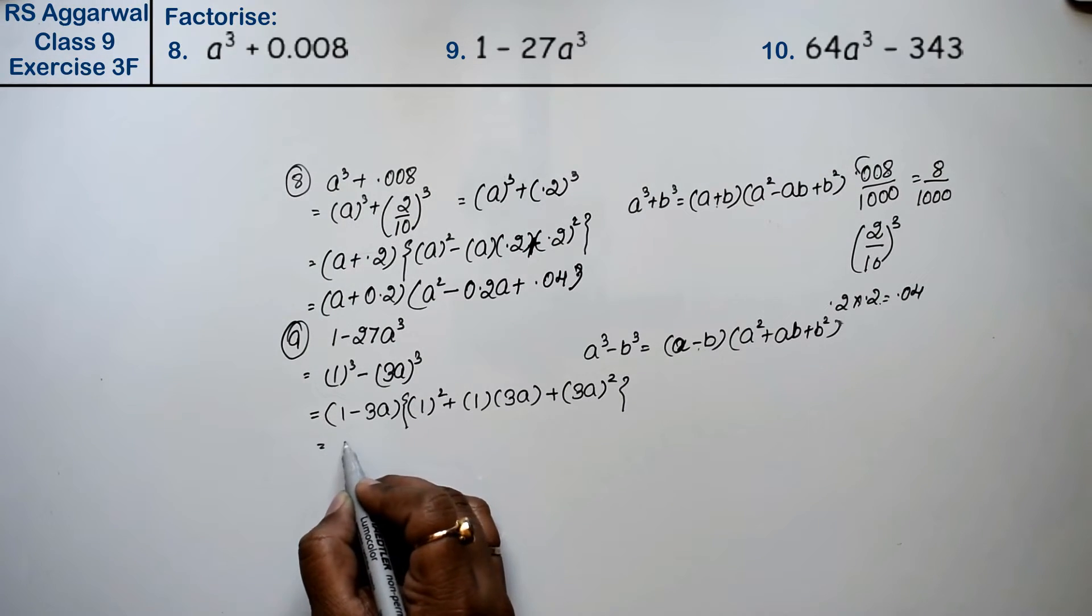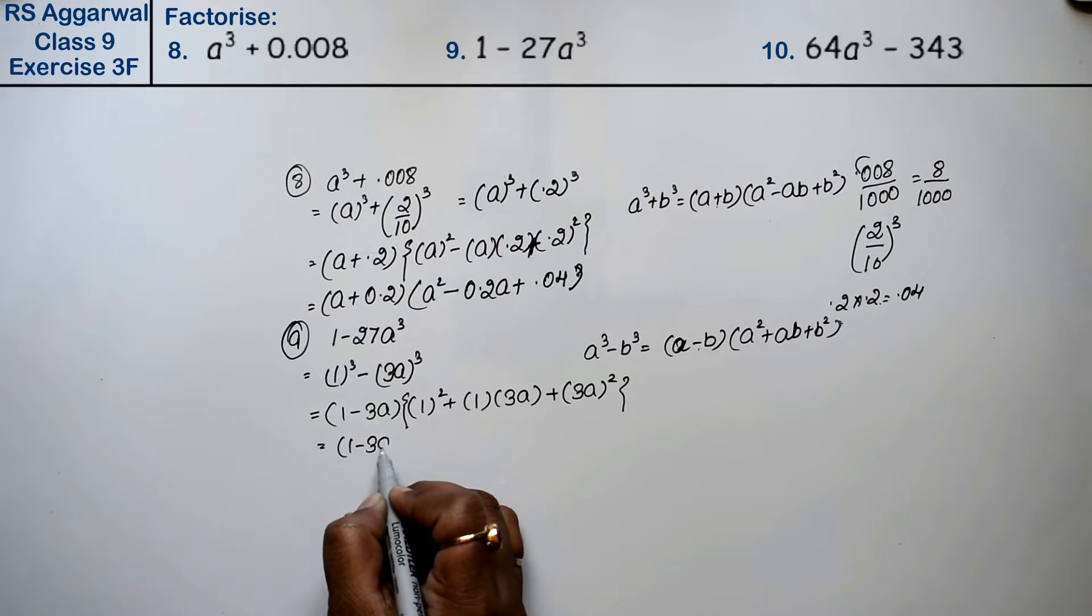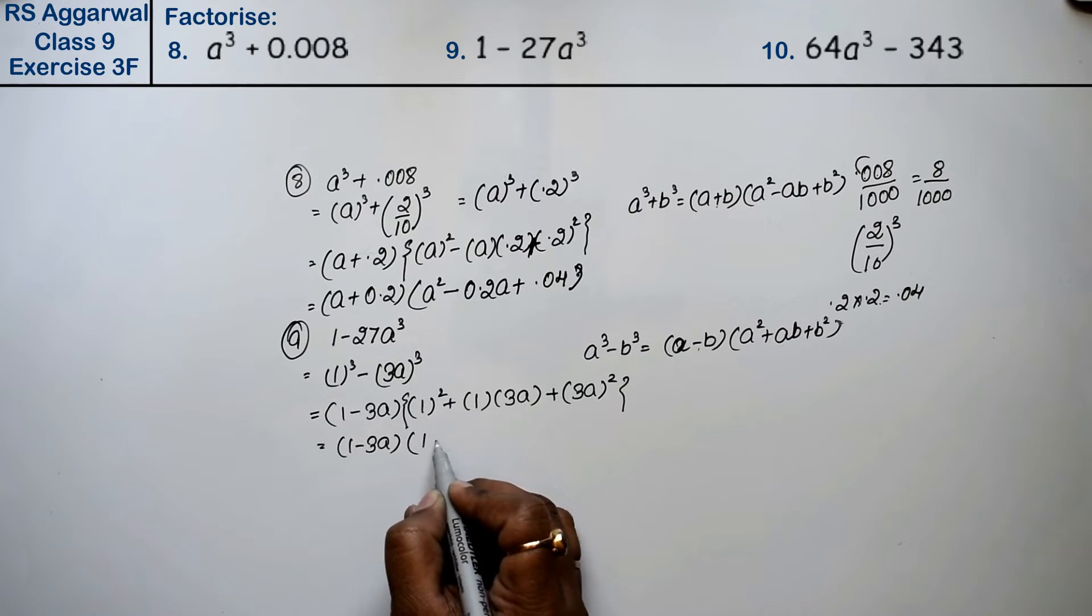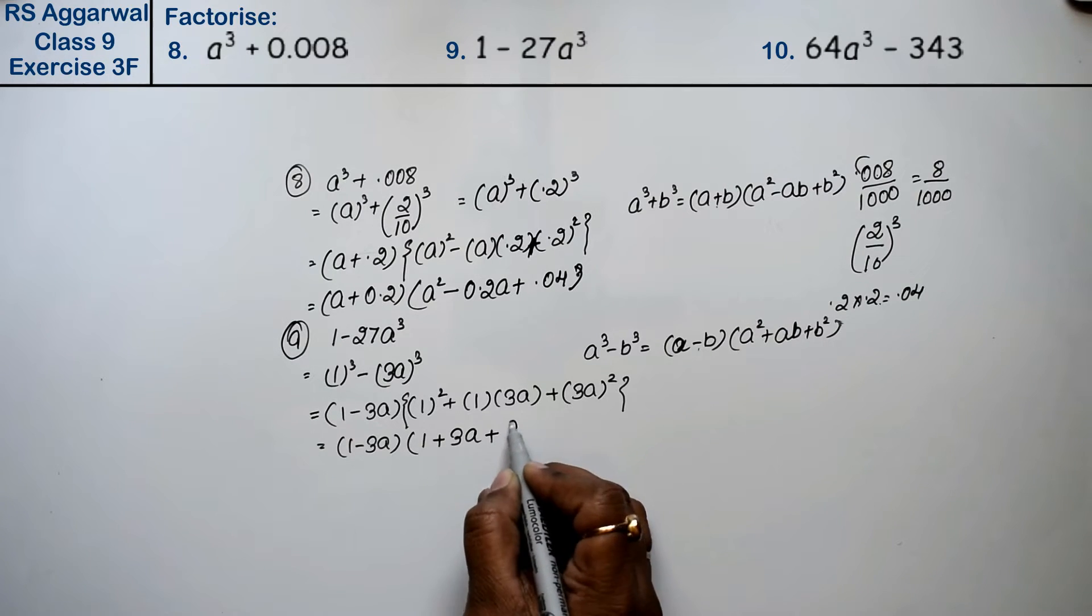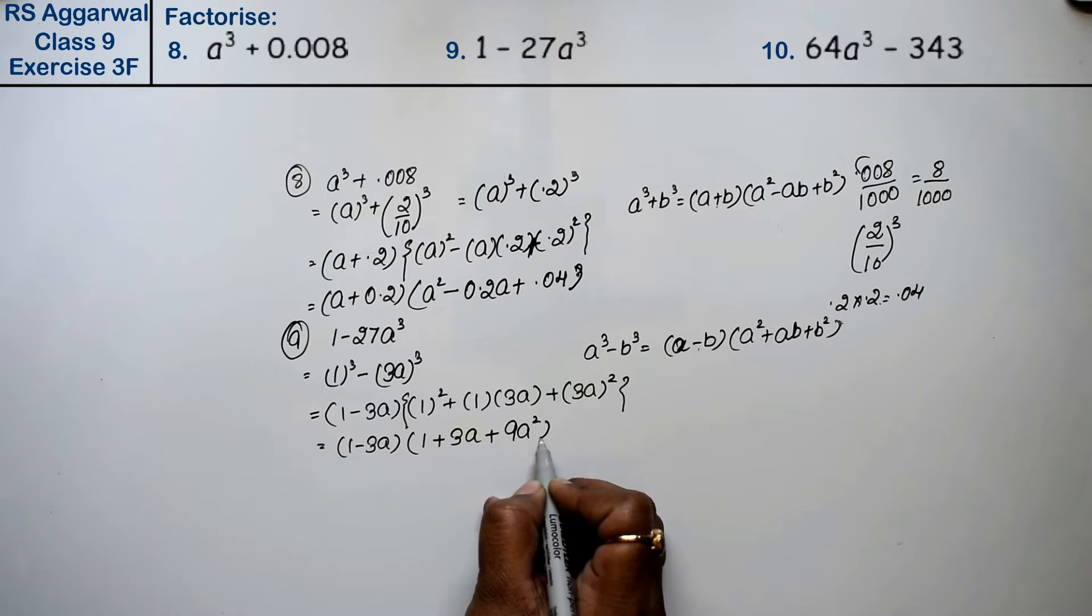So here I am going to write (1 minus 3a)(1 plus 3a plus 9a²). That is the answer.